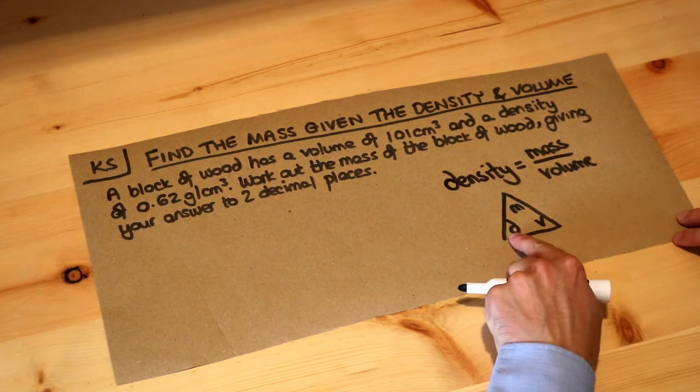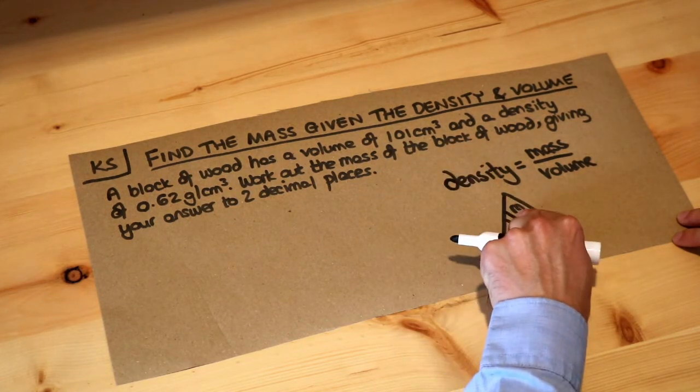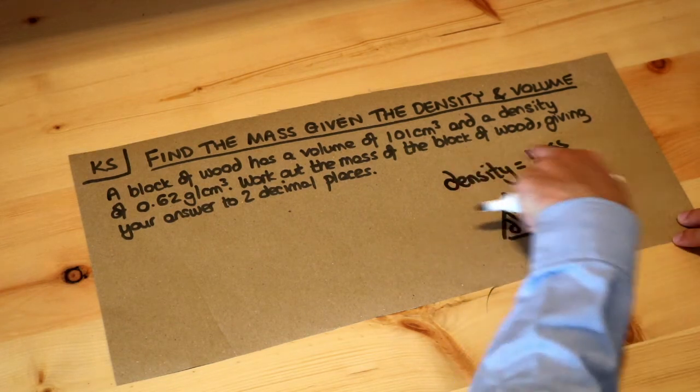So for example, if you want to work out the density, you could put the line here, and we can see that density is mass over volume because it's vertically above volume. Mass over volume, and we get that formula here.